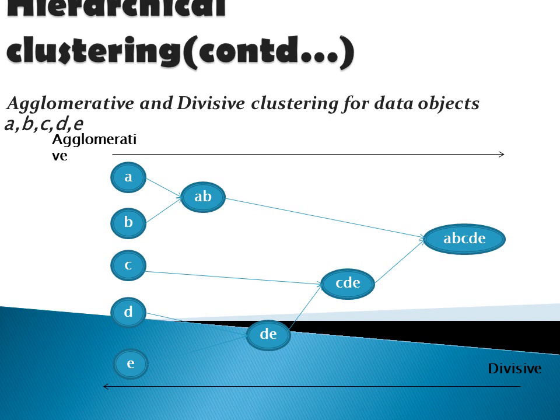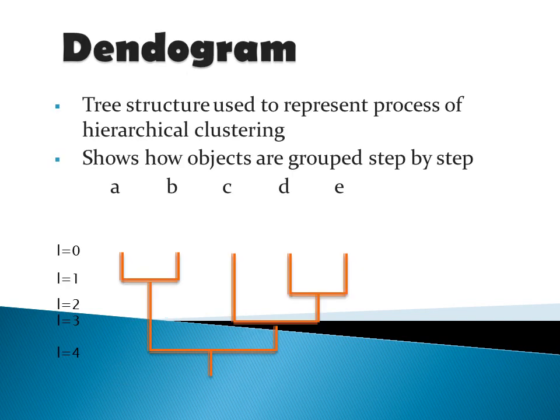The divisive method is the reverse operation of the agglomerative method. Initially we have a single cluster containing all data points, which we split at each step until we get each point in its own individual cluster. This is the simple example of an agglomerative and divisive strategy.